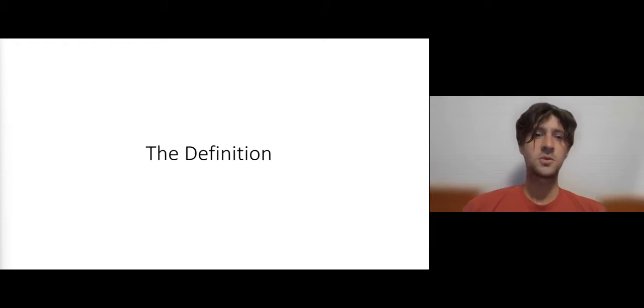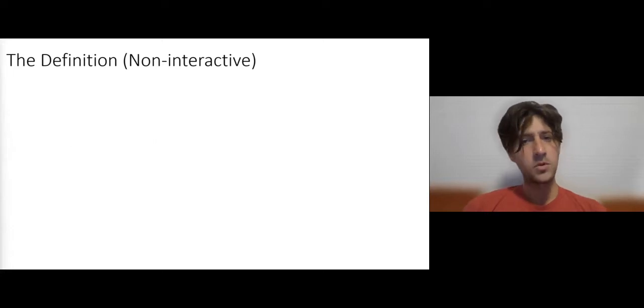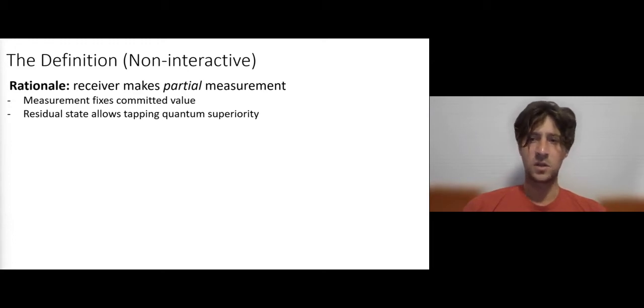So let's start by introducing our definition. I'm going to focus on the non-interactive setting, although the notion itself also makes sense for interactive. And the basic idea behind the definition is as follows. We saw that if the receiver makes no measurements, then a superposition attack is unavoidable. On the other hand, we said that we don't want to measure everything and make the commitment entirely classical. So the natural thing is perhaps to allow for partial measurement. And the goal is that on one hand, it will suffice for fixing the message. And on the other hand, it will leave the commitment sufficiently quantum to achieve superior features.